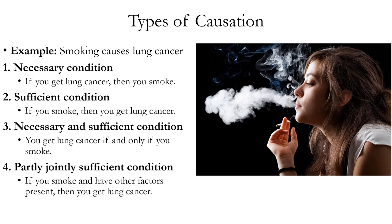Fourthly, we can think of a cause as a partly jointly sufficient condition. Joint sufficiency means that multiple factors go into producing something — in the context of causation, multiple causes work together to produce an effect. This is common in complex systems like human bodies, where multiple factors interact all at once. In the case of smoking and lung cancer, the most reasonable interpretation is that smoking is a partly jointly sufficient condition: if you smoke and have other factors present — such as certain genes and environmental factors — then you get lung cancer.